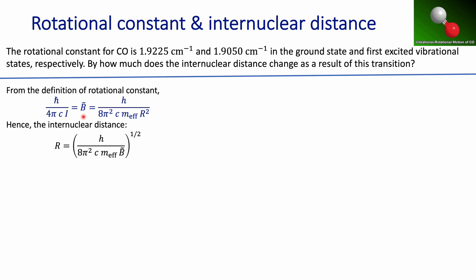This expression defines the rotational constant in terms of wave numbers. Remember there's another expression where you can have the rotational constant in terms of frequencies, and the relationship between the two is that if you multiply the rotational constant in wave numbers by the speed of light, you get the rotational constant in terms of frequencies.